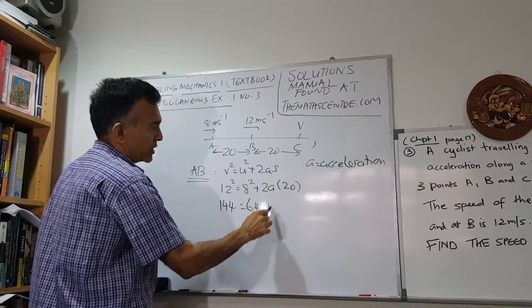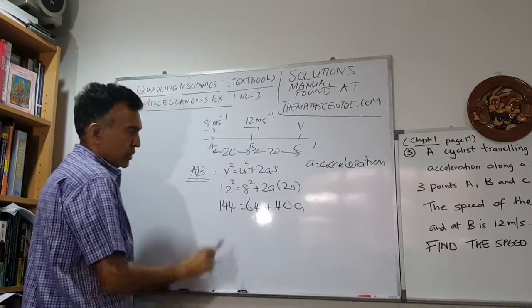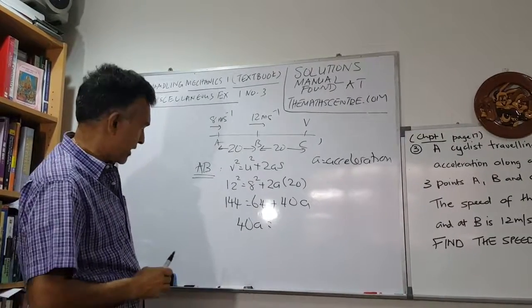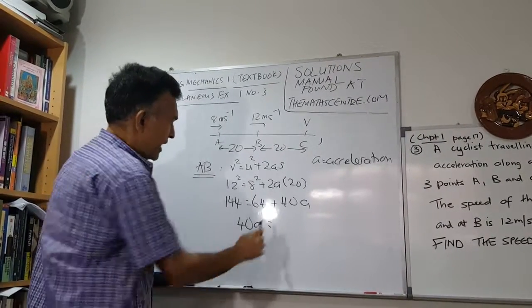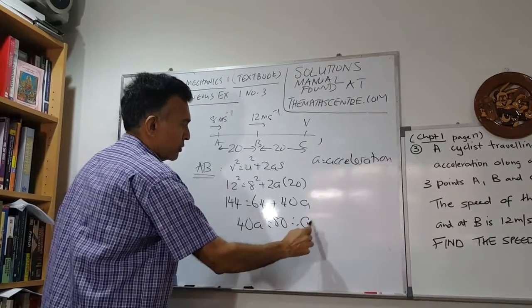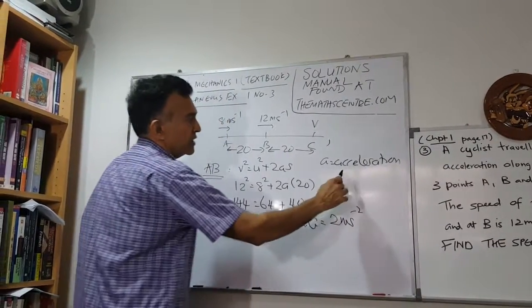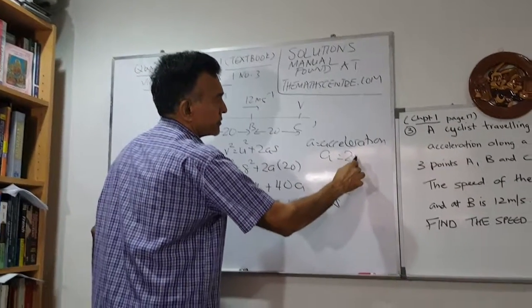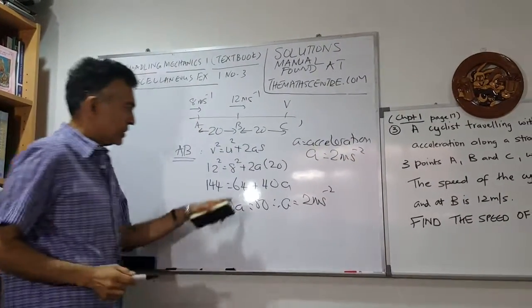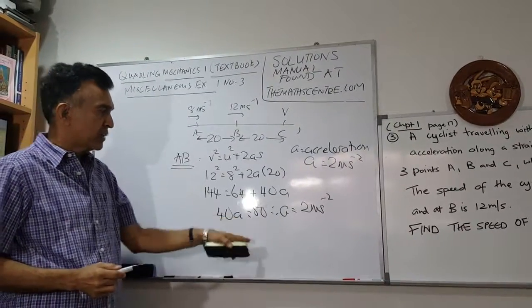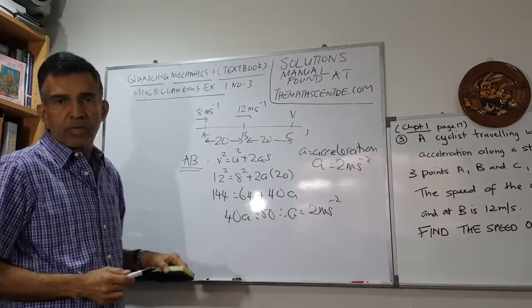We have 144 = 64 + 40a. So 40a = 80, therefore a = 2 meters per second squared. 144 minus 64 is 80, so we find a is 2 meters per second squared. Now they want the speed of the cyclist at C.